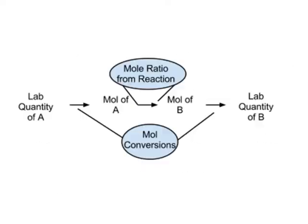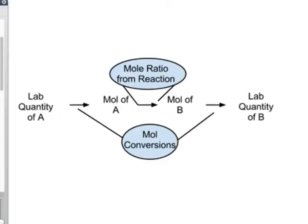Every time we do a stoichiometry problem, we don't want to draw a picture. Instead, we use a roadmap: starting from one lab-measurable quantity, using the reaction to find an unknown quantity. The general roadmap we'll always use involves mole conversions — something we've already covered — and mole ratios from the reaction, which is the new piece we haven't gotten into yet.